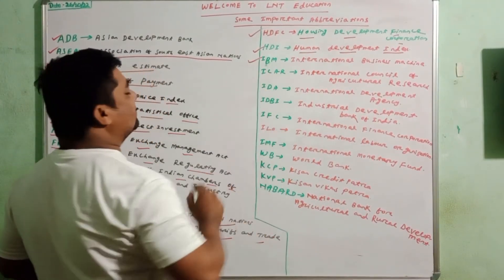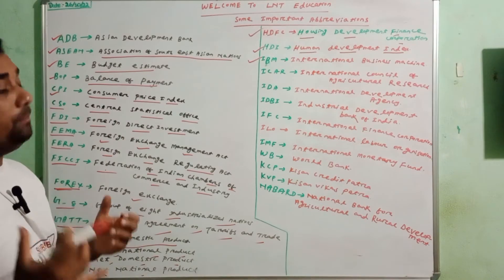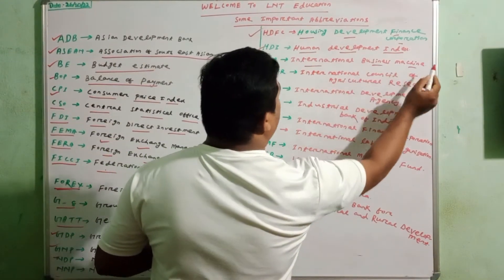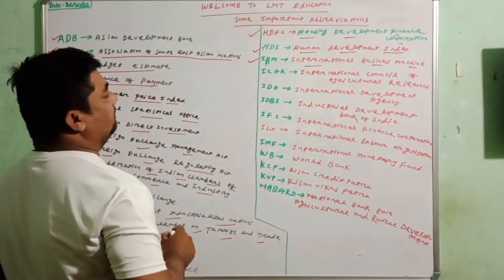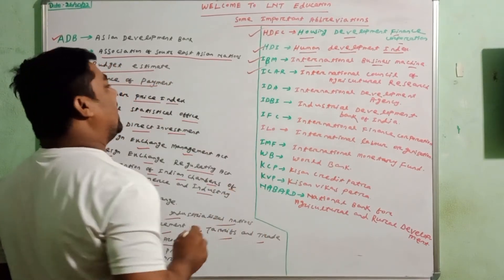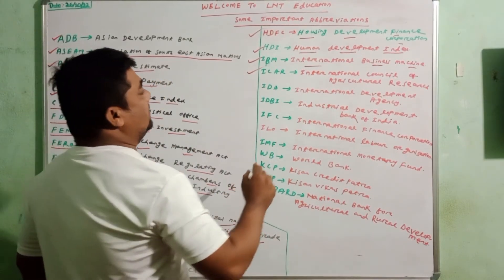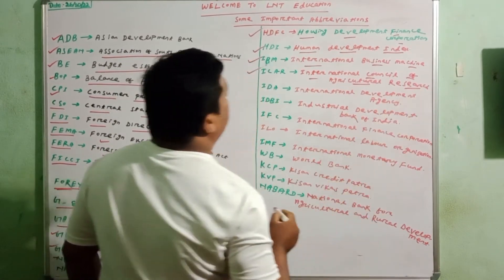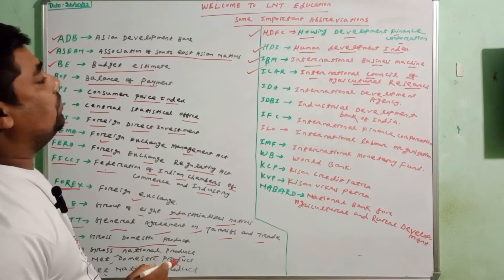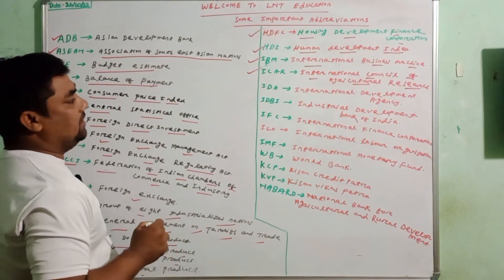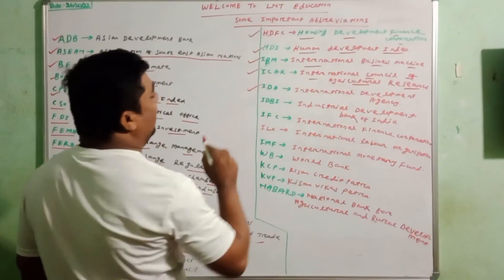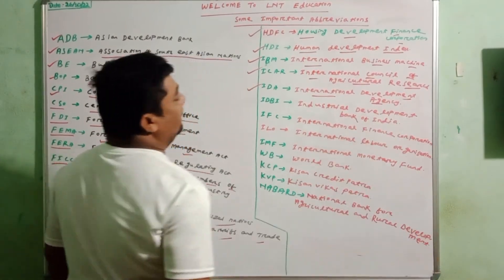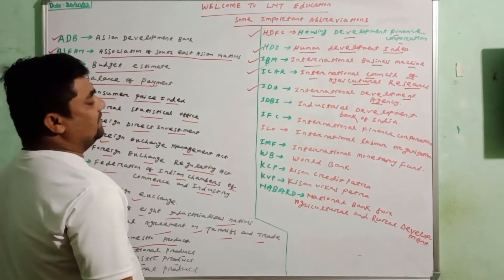IBM means International Business Machine — it is a very reputed computer manufacturing company. ICAR means Indian Council of Agricultural Research. IDA means International Development Agency.